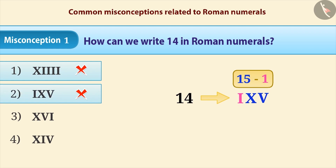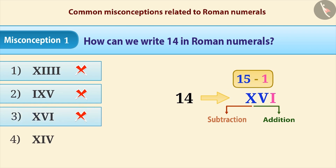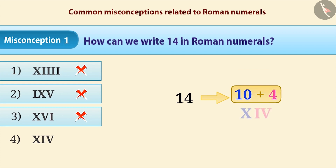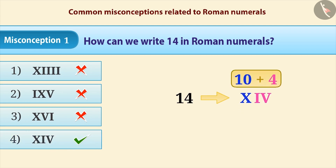Similarly, due to confusion regarding writing a symbol to the left for subtraction and to the right for addition, the symbol of 1 is written to the right side of symbol of 5 — this is also a misconception. The correct way is to write it as the sum of place value of digits. Here 14 means 10 plus 4, and by putting the symbol of 10 and 4 together, we get the correct result.